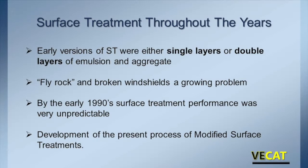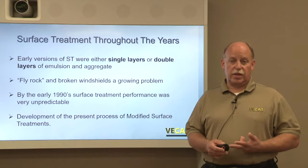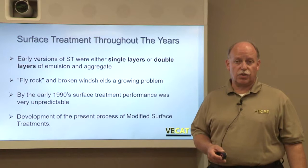Surface treatment throughout the years has developed and been used, but as a whole, the surface treatment stayed the same from those early 1930s all the way through the 1960s, 70s, and even into the early 1980s. They performed very well overall to provide a water-resistant layer on top of hard surface and sometimes non-hard surface gravel roadways. But as the types of vehicles began to change, speeds changed, and the need to apply these to roadways with slightly higher volumes occurred, problems began.